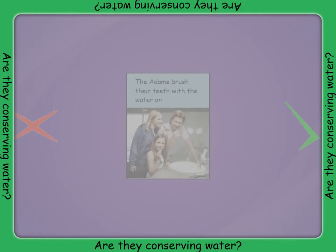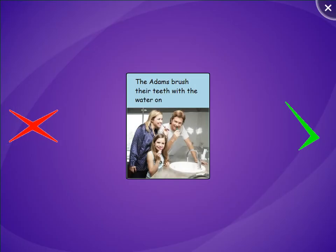Look at the picture in the middle and listen carefully to what is being said out loud. Is water being conserved or wasted? If it is being conserved, drag the green check mark into the middle. If water is being wasted, drag the red X into the middle. You can touch the middle picture to hear the description said out loud again at any time. The Atoms brush their teeth with the water on.